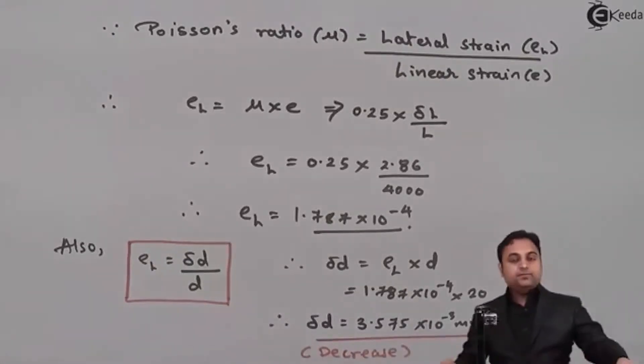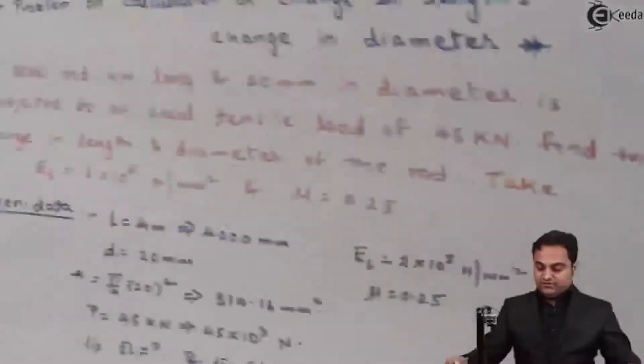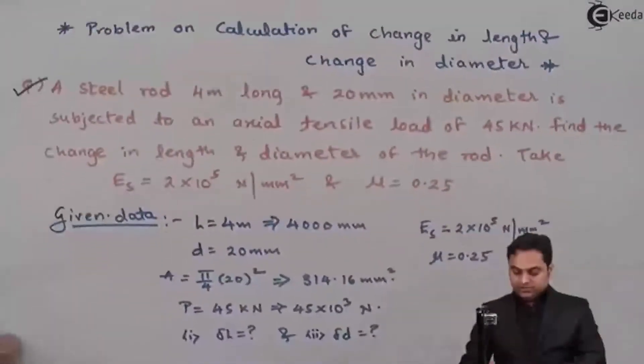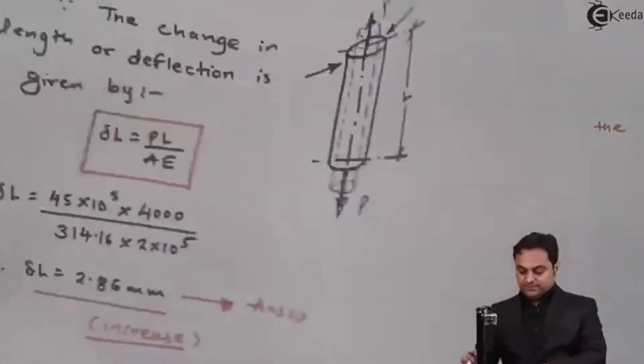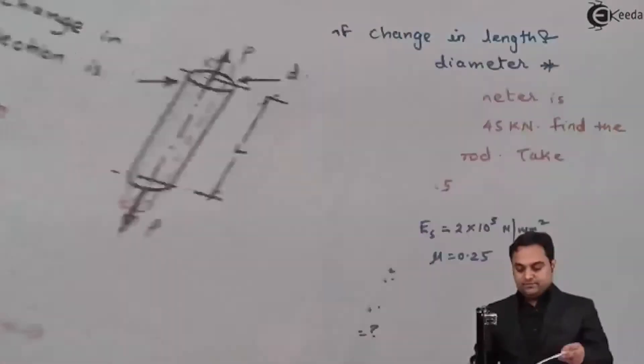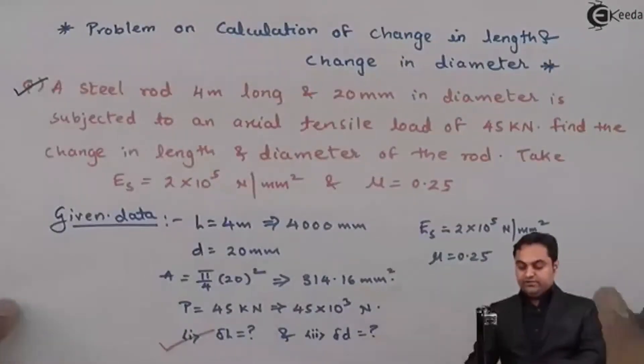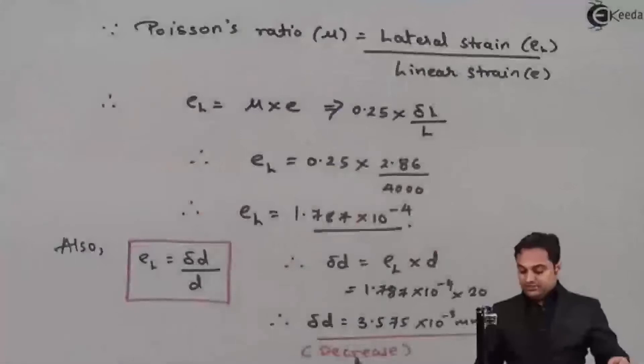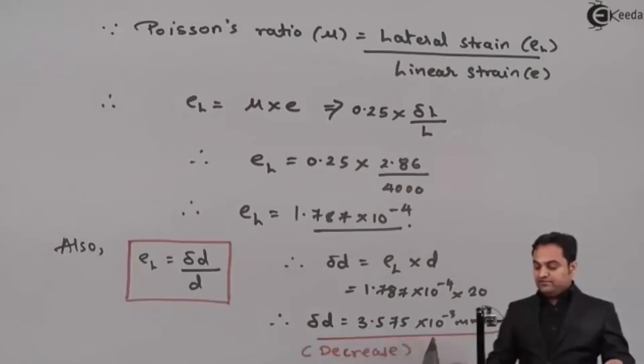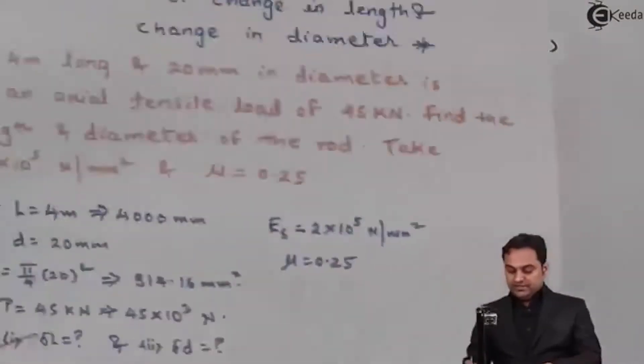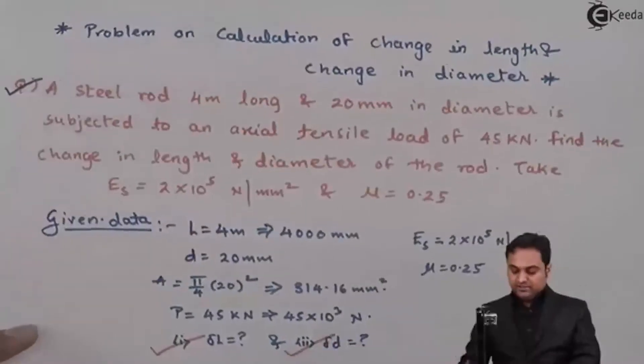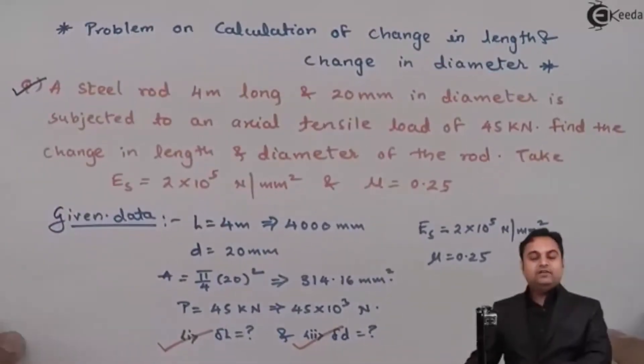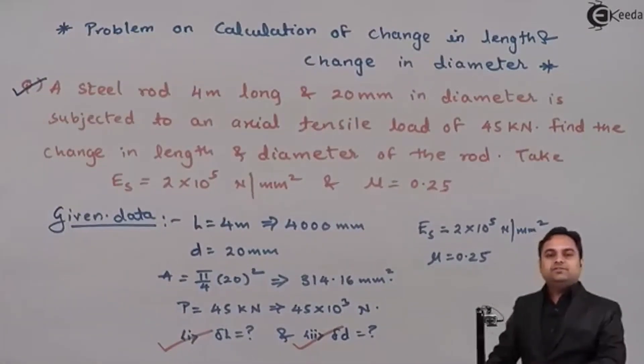So if we see in the problem there were two things which we have to find out. Change in length, the answer is 2.86 mm, so that we have calculated for the given condition. Next, change in diameter which is 3.575 × 10⁻³ mm, that is decrease in the diameter. And once we have found out both the values we can say that the problem is completed. Thank you.